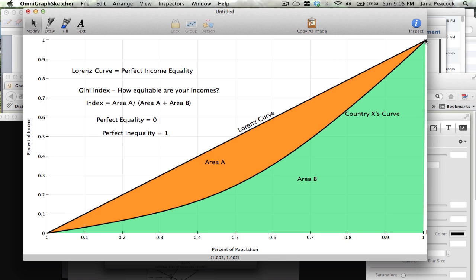Well, as you might imagine, real countries don't work this way. So here I have country X's curve, and that would be the curve here bounding between area A and area B. And in country X, 10% of the population only makes 2-3% of the country's income, while 30% of the population makes only 10% of the population's income.